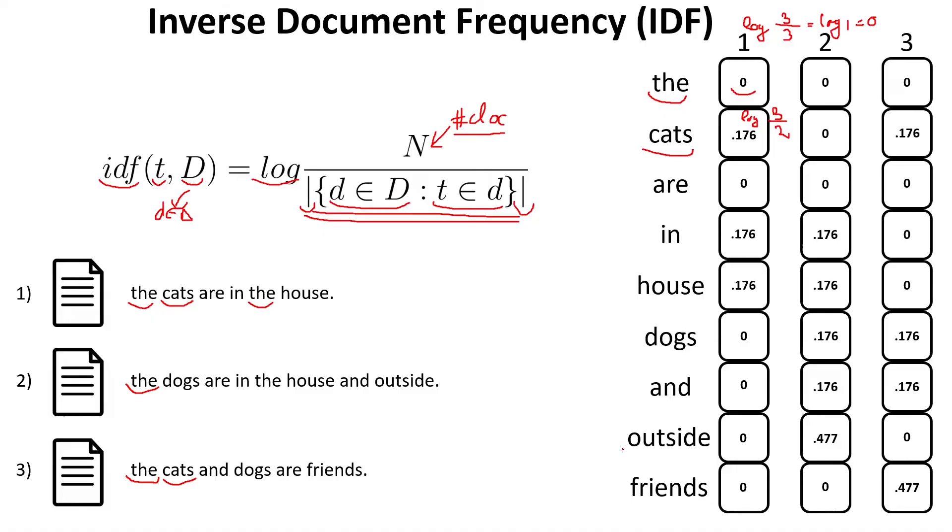On the other side, we have the words outside and friends, which gets like a very high value in our IDF vectors of 0.477. And they get this value because they appear only once in our documents. Outside appears only once in the second document. And also, friends appears only once in the third document.